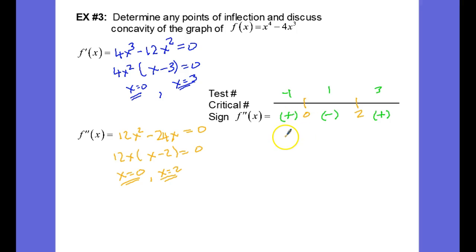my graph is concave up, and it is also concave up from 2 to infinity, it is concave down between 0 and 2.